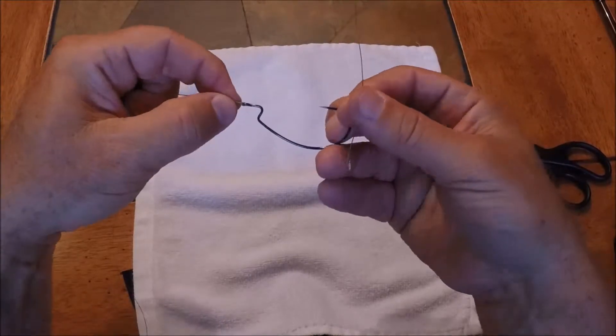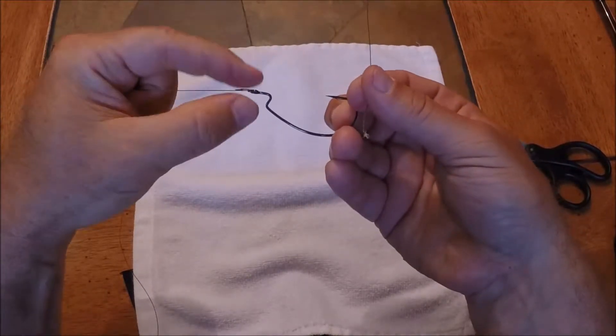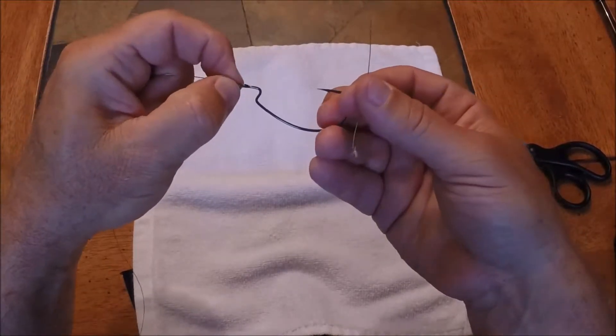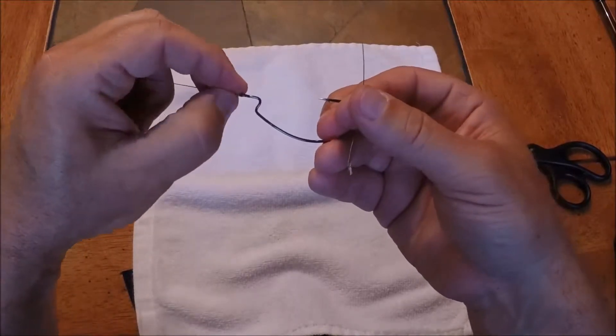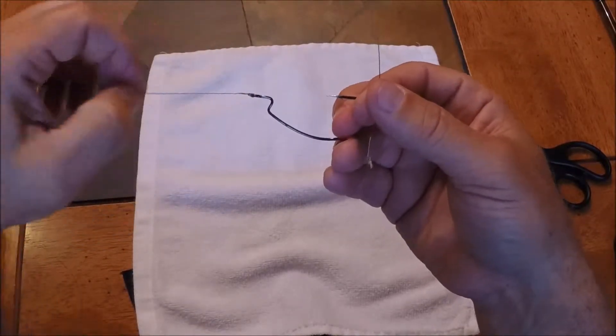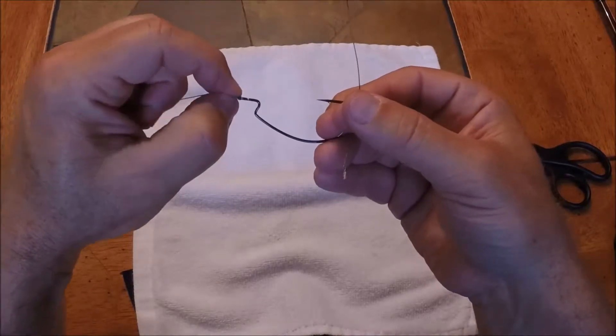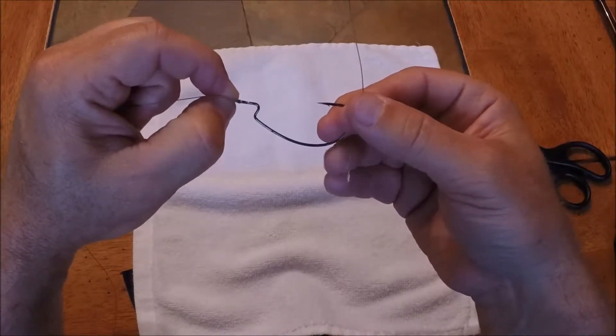So that's the Palomar knot, one of the strongest knots. Again, you should master this. You should be able to tie this with your eyes closed, tie it in a rocking boat with wind. You should be able to tie this in probably less than 20 to 30 seconds.